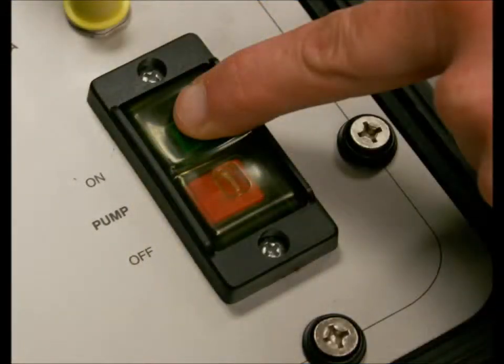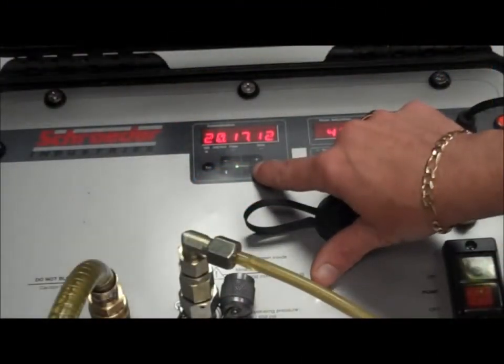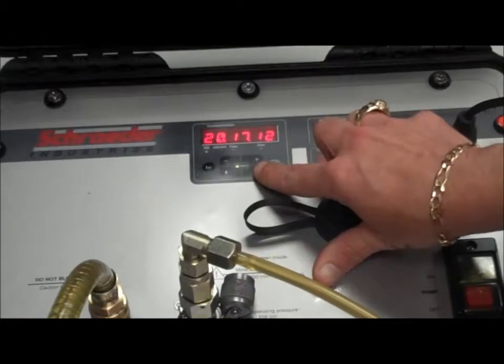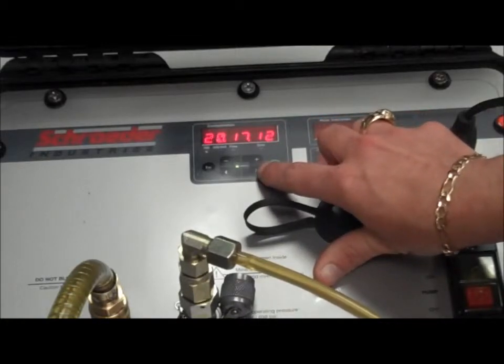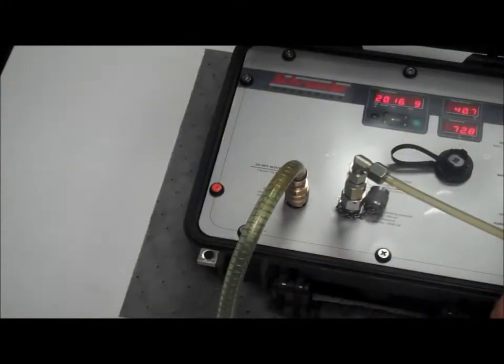Next, you turn on the pump, and then you go and select whatever code you're working with, whether it be ISO, SAE, or NAS code. You now let the sample bottle run, and you can see the sample coming in and coming out of the unit.